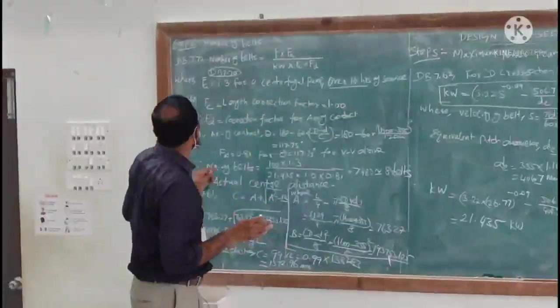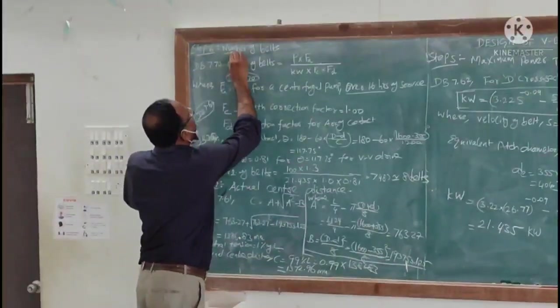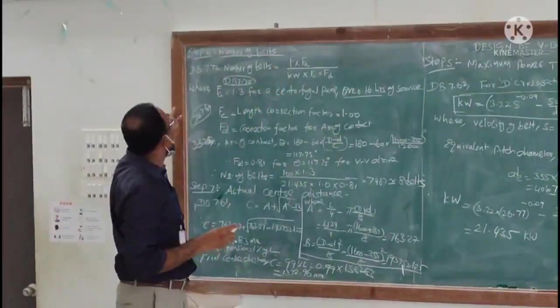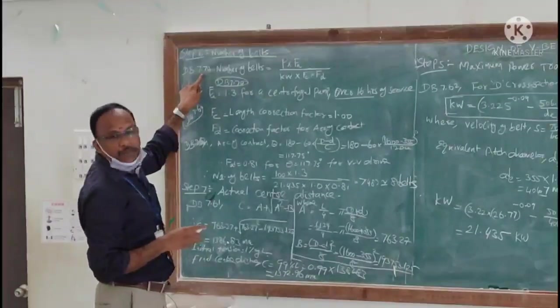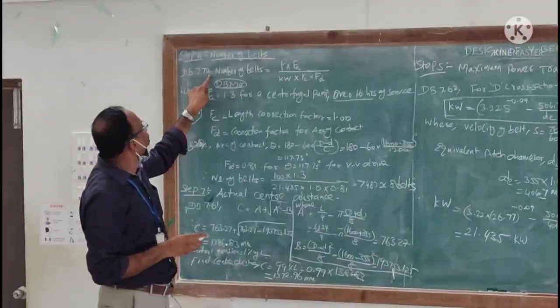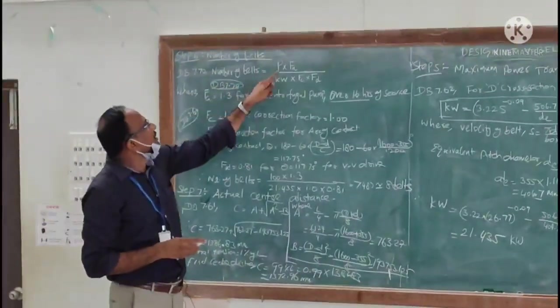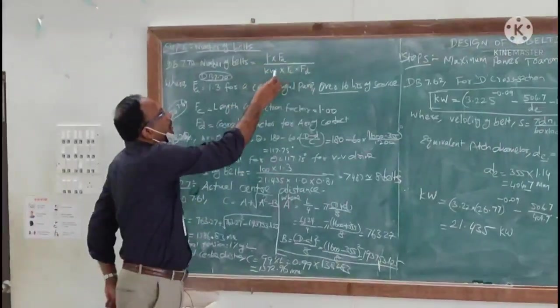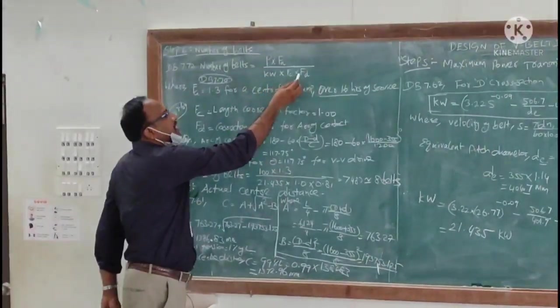Now we move to step number 6. Now we are going to calculate number of belts. From the data book page number 7.70, number of belts is equal to P times Fa by K_tau_u times Fc times Fd.